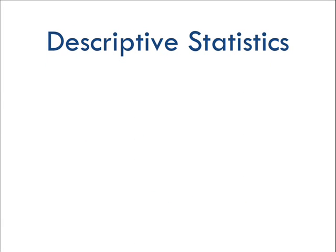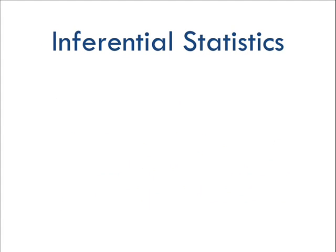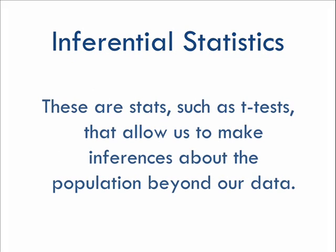This leads us to the difference between descriptive and inferential statistics. A descriptive statistic only describes the sample we have — it doesn't tell us if our results are likely to happen again. In contrast, a t-test is what we call an inferential statistic. Inferential statistics don't just describe our sample; they tell us what we can expect in new samples and allow us to generalize our findings to a whole population beyond the sample we're testing. That can be very powerful.